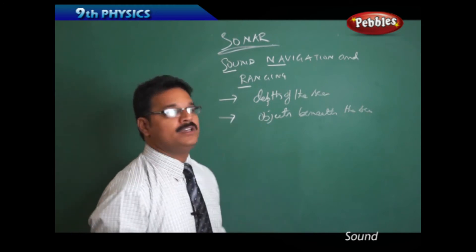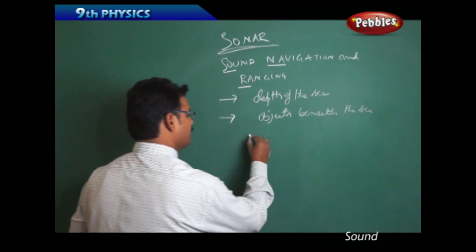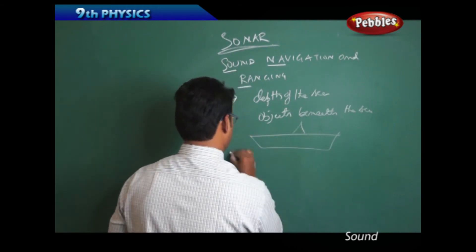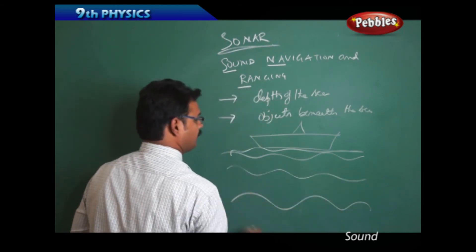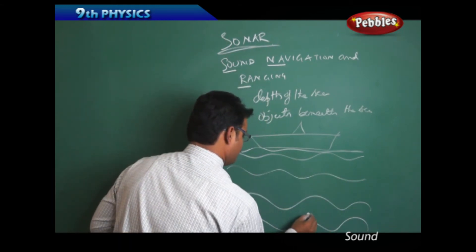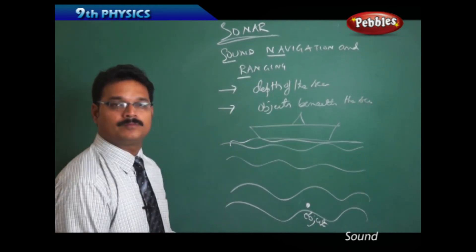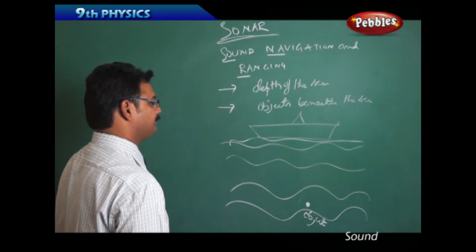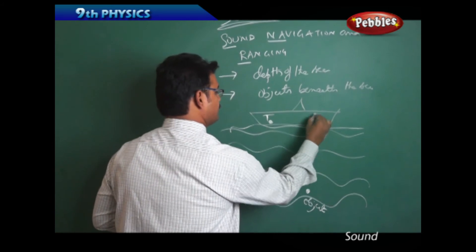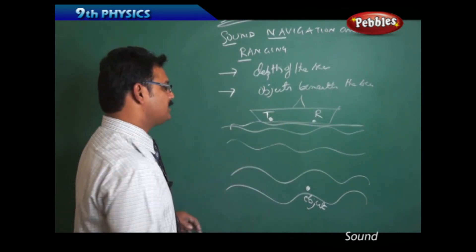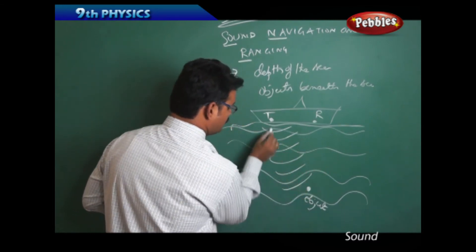Let us discuss. There is a ship on the sea water surface, and there is an object here. There is a transmitter and there is a receiver. Now the transmitter sends the ultrasonic waves so that ultrasonic waves go towards the object and reflect and go to the receiver.